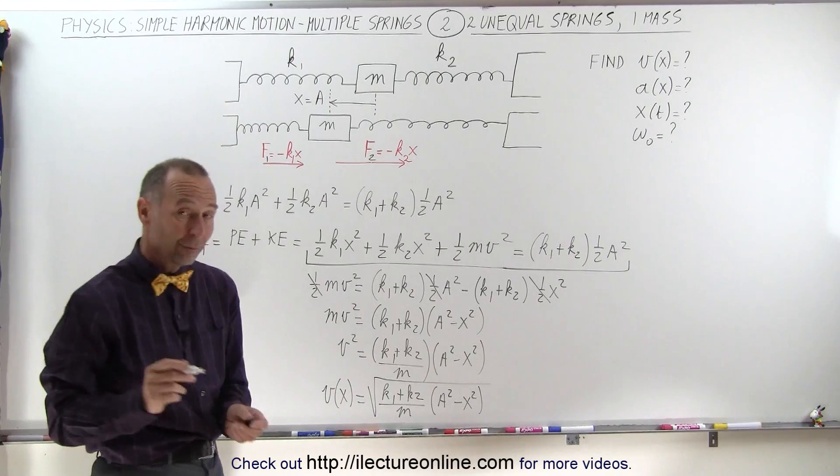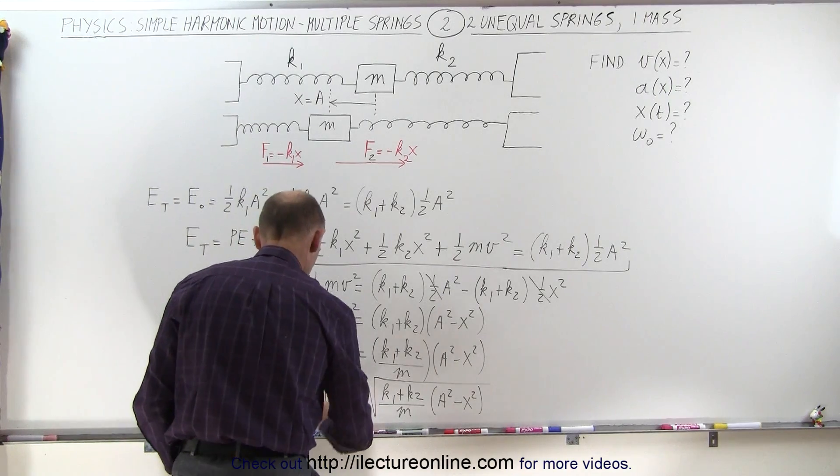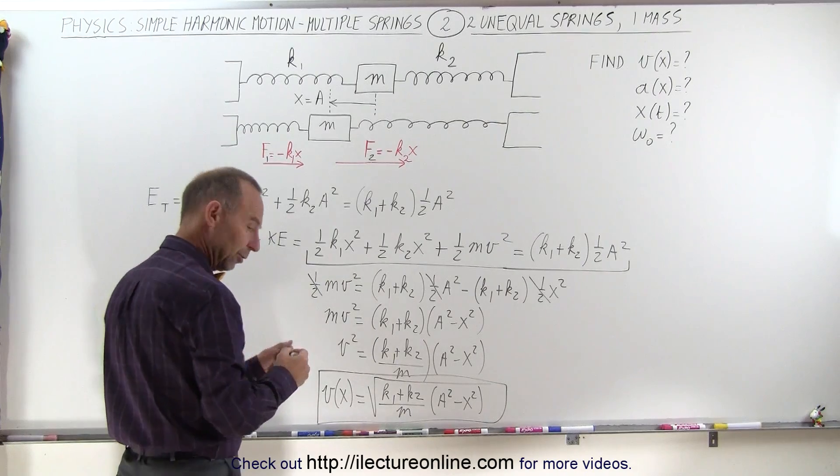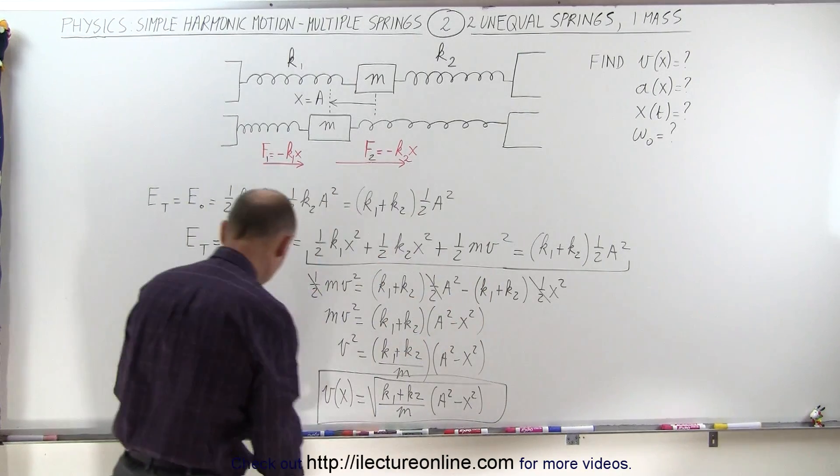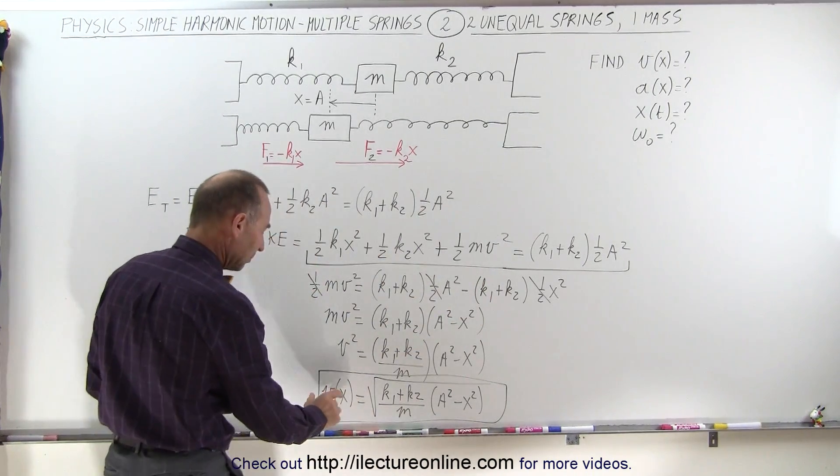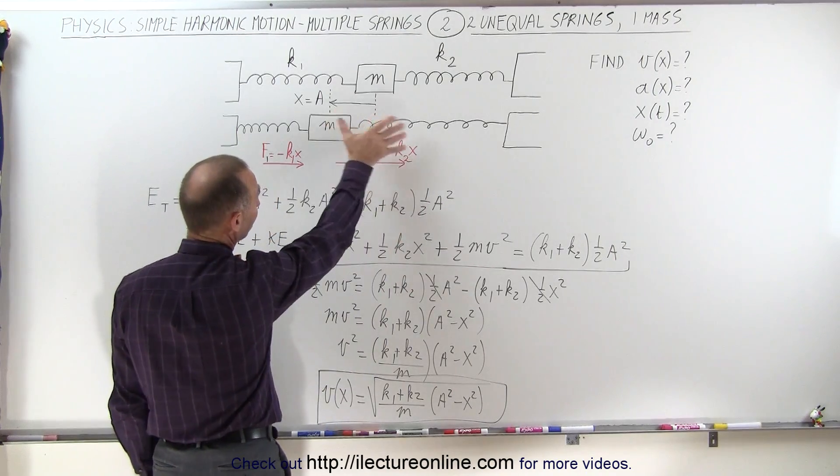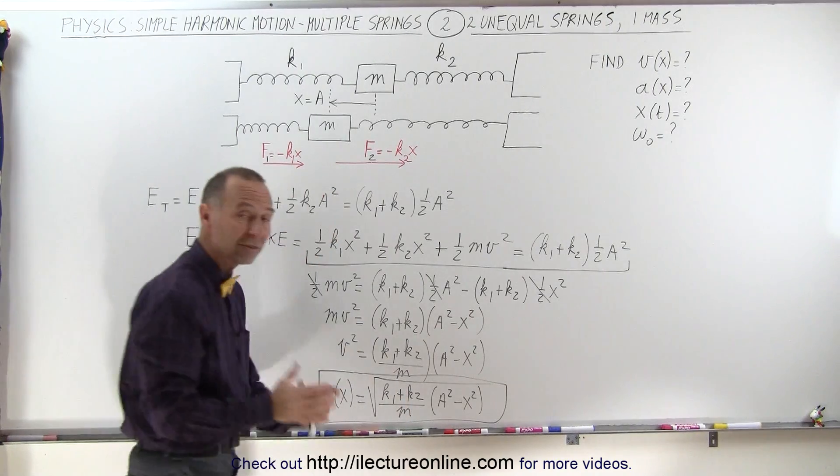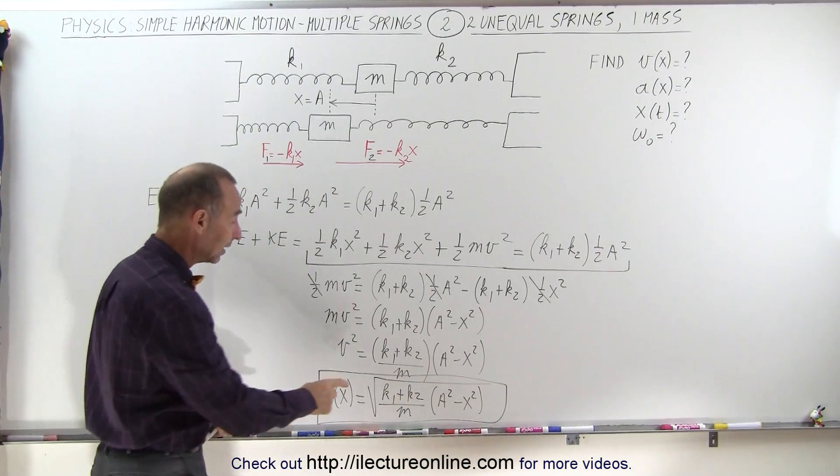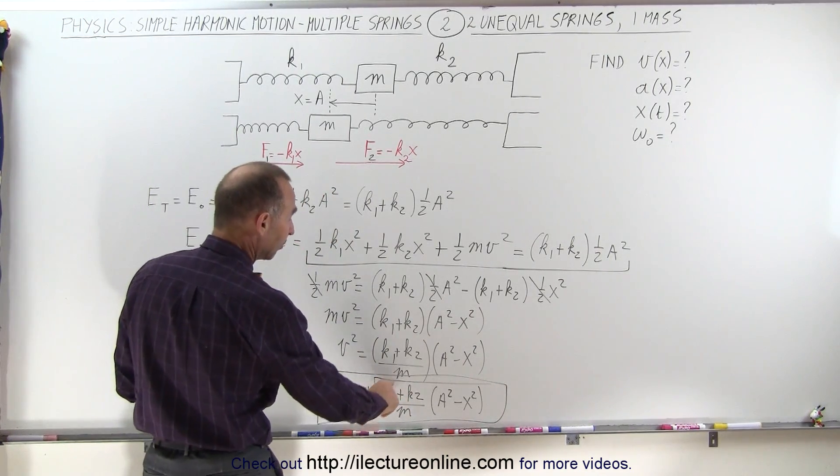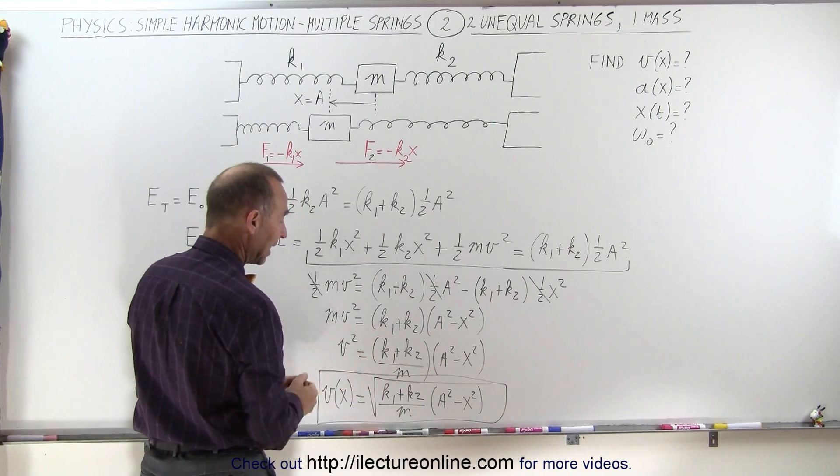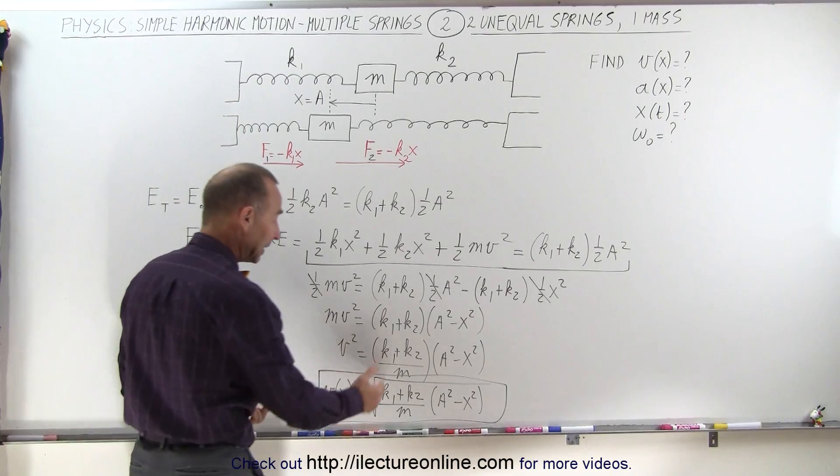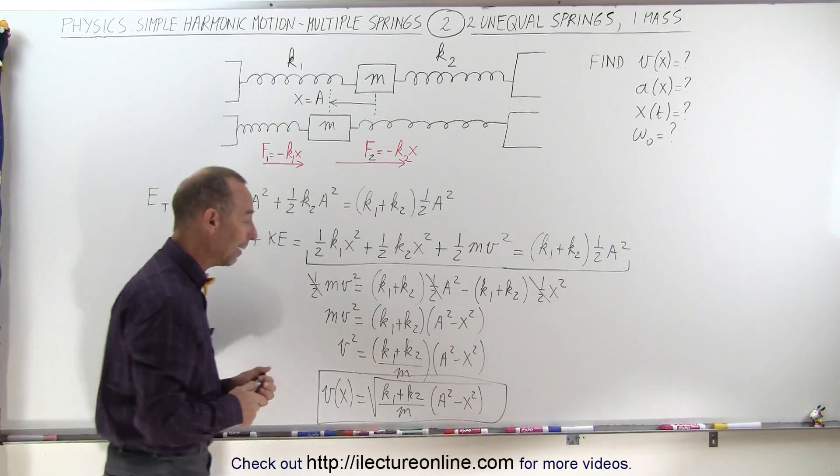Notice that this looks very similar to what we had before. What we had before, when the two springs were equal, and I think this pen is dying on me, so let me try this one here. So what we had before, we had the velocity as a function of x when both springs were equal to one another. We had it as 2k over m because they were equal. But if they're different, like this, then it becomes k1 plus k2. We simply add the k's divided by m. Of course, if there's only one spring, it would be k over m. So you see the similarities in that.